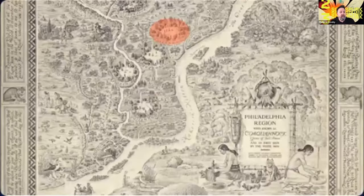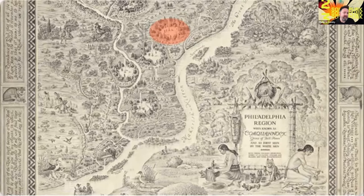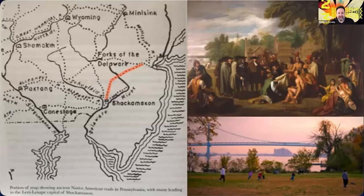I want to start by recognizing the land where I live and work. Philadelphia stands on the indigenous territory known as the Lenape Hoking, the traditional homelands of the Lenape, also called the Lenae Lenape or Delaware Indians. The area highlighted on this map, produced in the 1930s by the WPA, is called Shakamaxon, which was the capital of the Lenape Hoking and the site of the 1682 signing of the so-called friendship treaty between the Lenape and William Penn, paving the way for the settlement of Philadelphia and Pennsylvania.